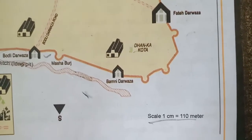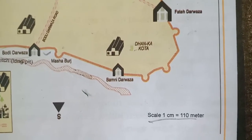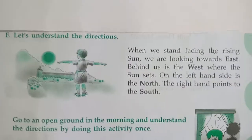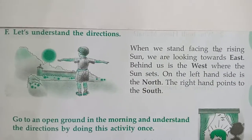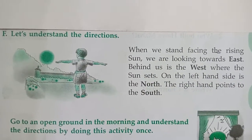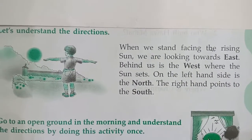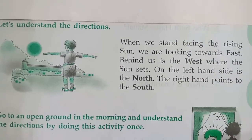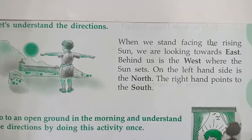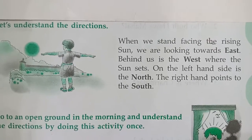One centimeter is equal to 110 meters. Now let us understand the directions. When we stand facing the rising sun, we are looking towards the east.